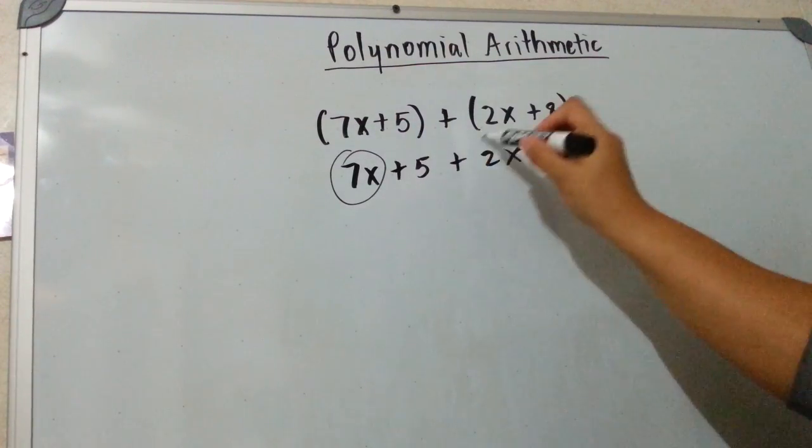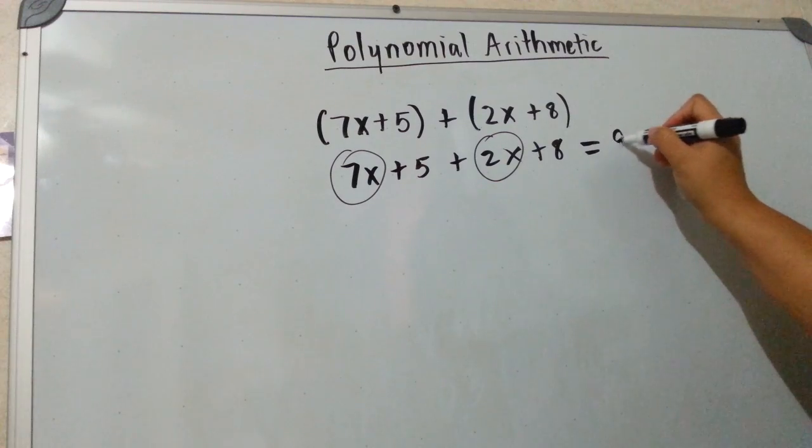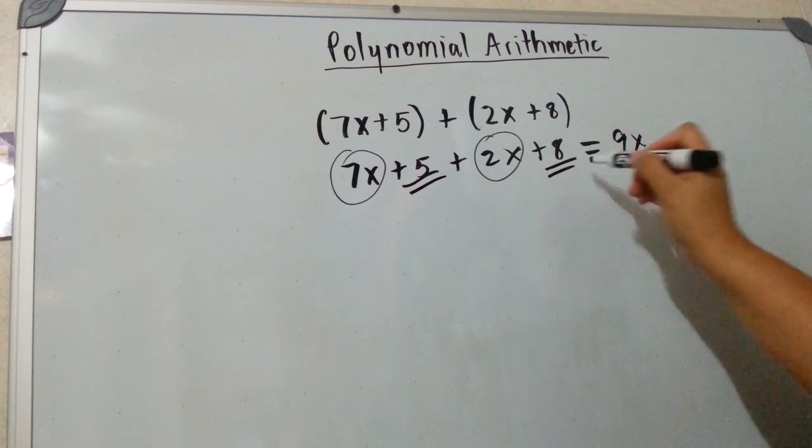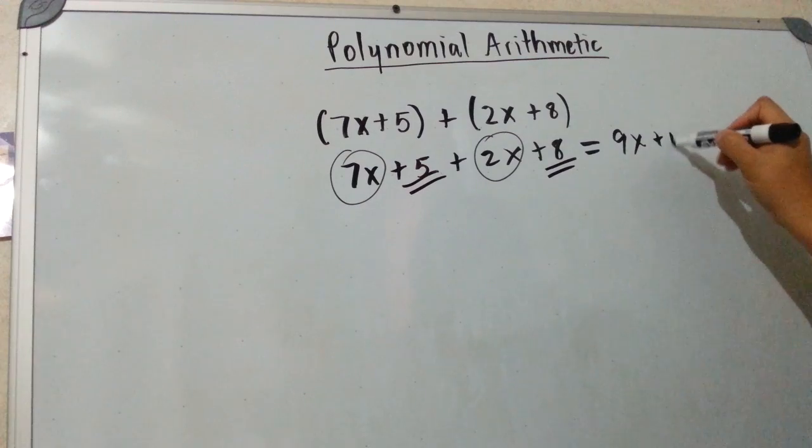So I would have to say 7x and 2x are like terms, 9x, 5 and 8 are like terms, and I would get 13.